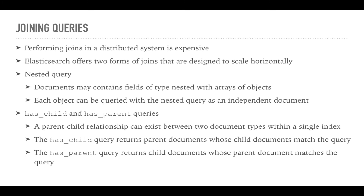Next are the has_child and has_parent queries, which are useful for parent-child relationships between two document types. The has_child query returns parent documents whose child documents match a given query, while the has_parent query returns child documents whose parent documents match a given query. So, the has_child query is used to add query clauses to child documents, whereas the has_parent query is used to add query clauses to parent documents.